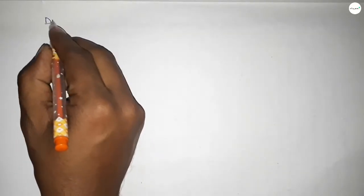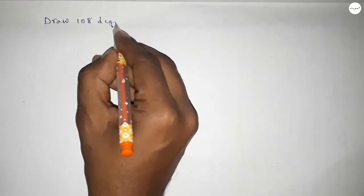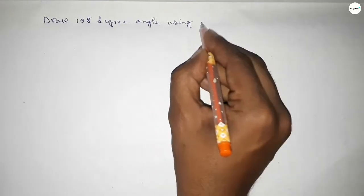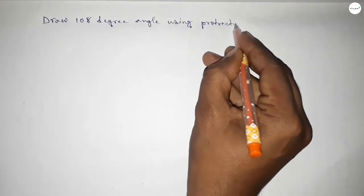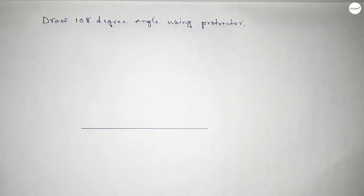Hi everyone, welcome to SI's Chair Classes. Today in this video we have to draw a 108 degree angle using a protractor. So let's start. First of all, we have to draw a straight line of any length.